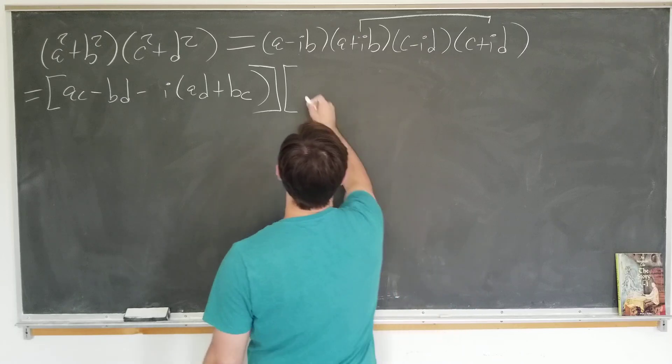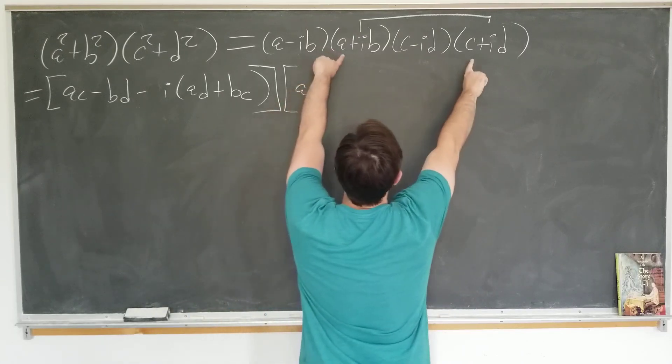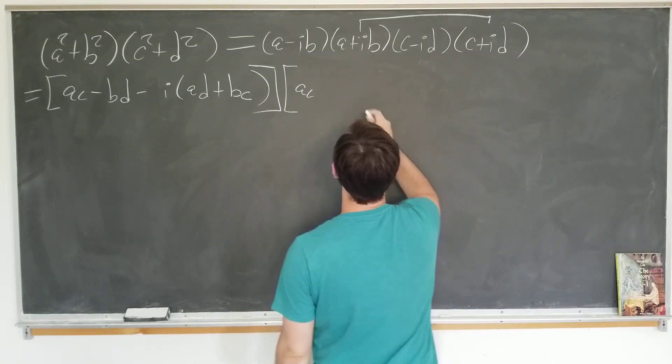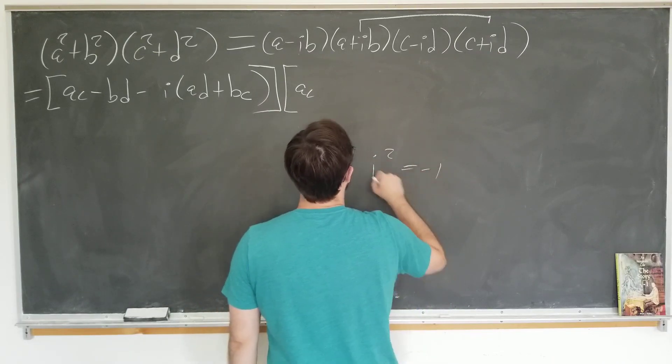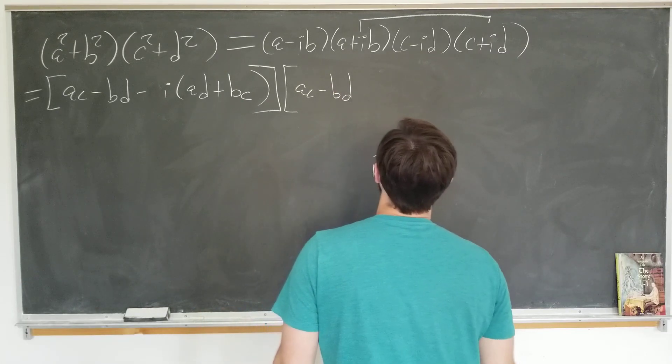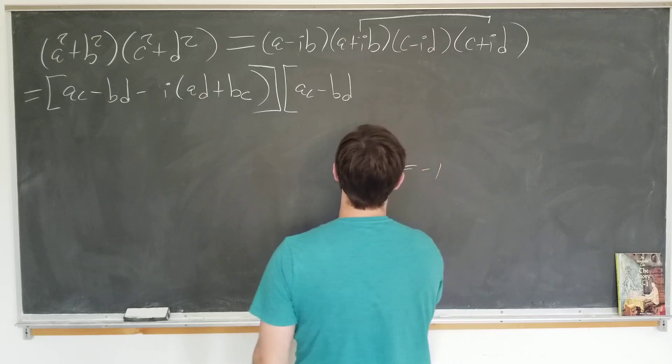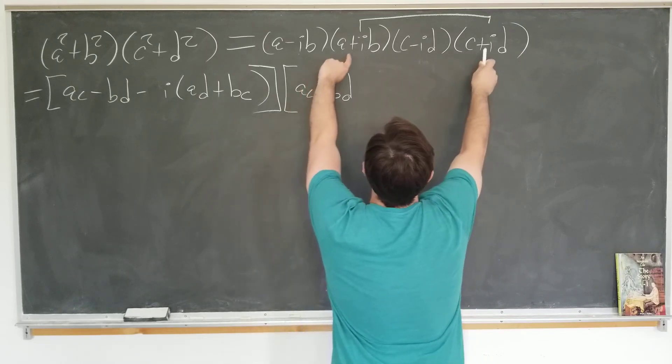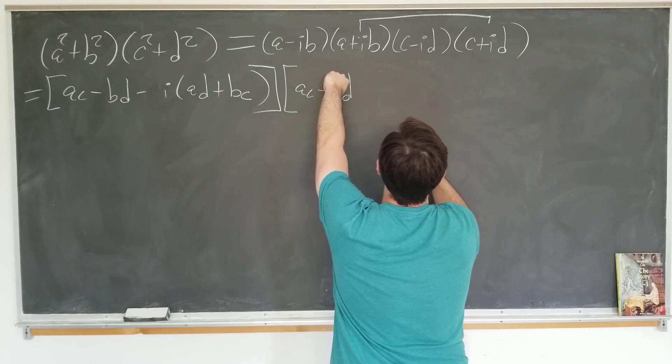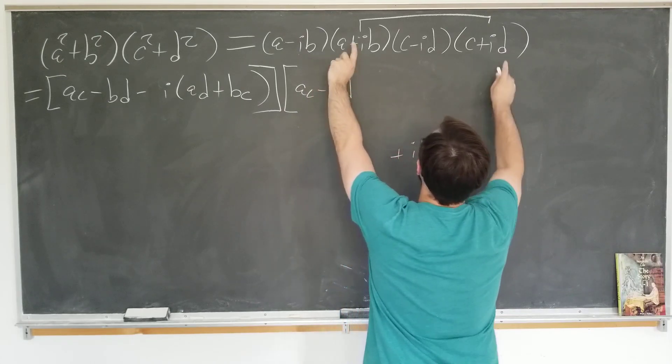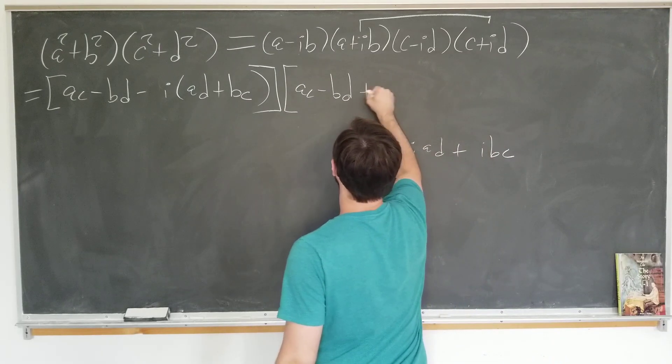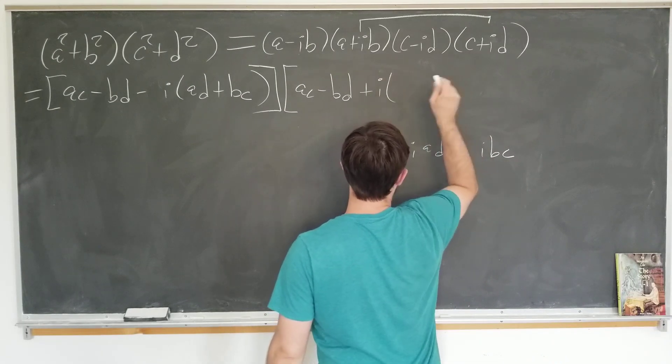So if we do that, we have ac. And the other real term is i squared bd. So it's minus minus bd. Sounds good. And the imaginary term, we have plus iad plus ibc. So it's plus i what we had before.